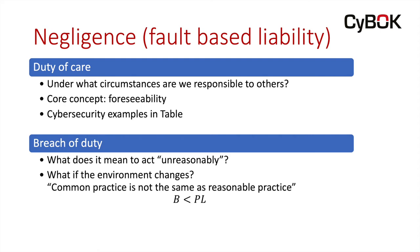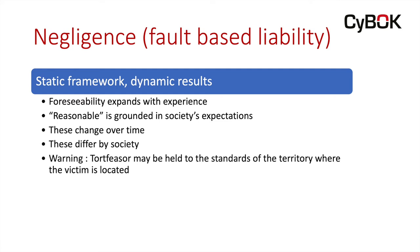Those two frameworks are essentially static — the rules about whether one person owes a duty of care to another and whether they've acted reasonably have not changed very much in hundreds of years, but nonetheless they produce dynamic results. The results change because our concept of foreseeability grows with experience. As we get more experience in the world of cybersecurity, we begin to see circumstances where our mistakes might create harm for other people. Similarly, our concept of what is reasonable also changes — it's grounded in social expectation, and both of these things can differ from society to society.